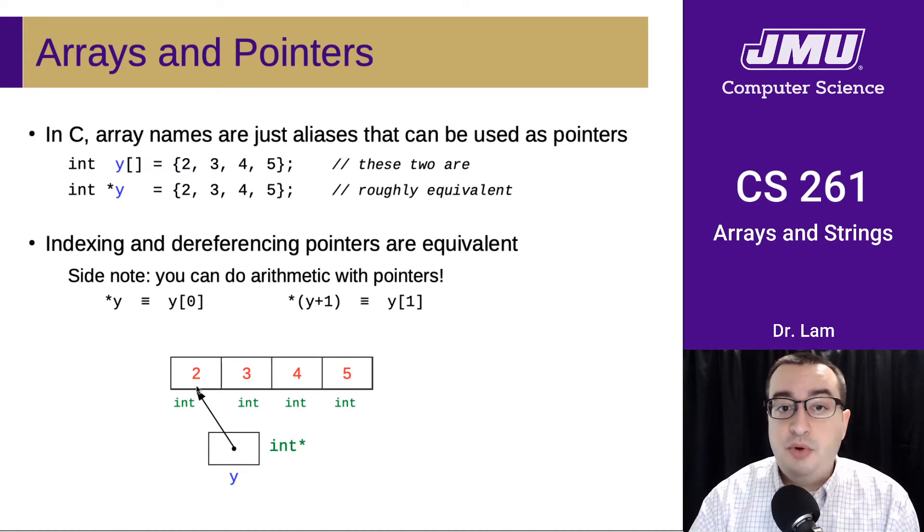Accessing the first element of an array is equivalent to just dereferencing the array pointer here. So Y is a pointer that points to this array. The array itself doesn't really have a name in this particular example. It's just a region of memory that has enough space for four integers consecutively laid out in memory. Dereferencing that pointer gets you the first element in the same way that indexing at index zero would also get you the first element.